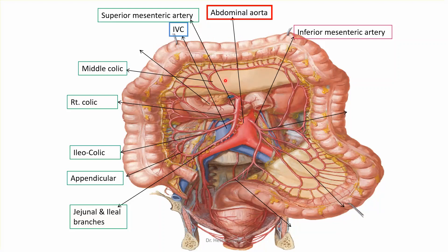These are all parts of the midgut supplied by the superior mesenteric, as discussed in the table. Do not forget the inferior pancreaticoduodenal, which is the first branch from the superior mesenteric artery, supplying the distal part of the duodenum and the lower part of the pancreas.